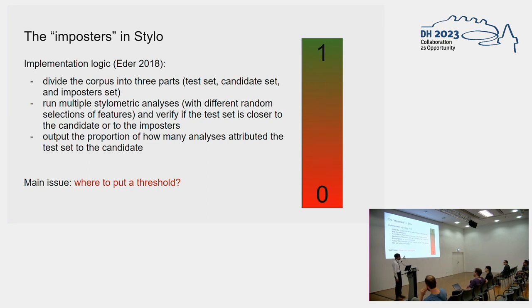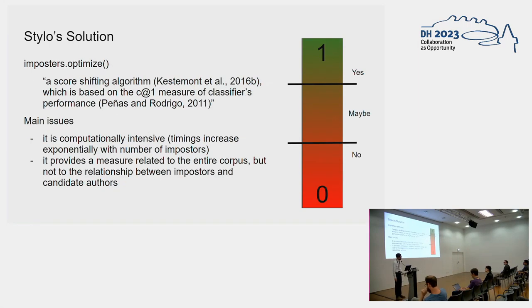Here the problem is where to put a threshold. You get a score between 0 and 1, and you cannot really say that 0.51 is indicative of confirmation. There should be some area of uncertainty. Stylo has implemented a solution in defining these thresholds, giving a yes, maybe, or no answer. The procedure is quite complex, a score shifting algorithm described by Kestemont and others.